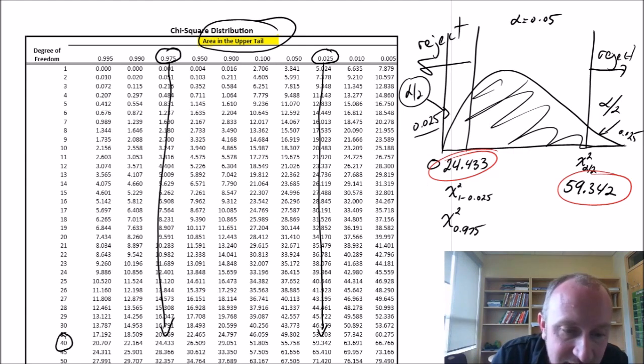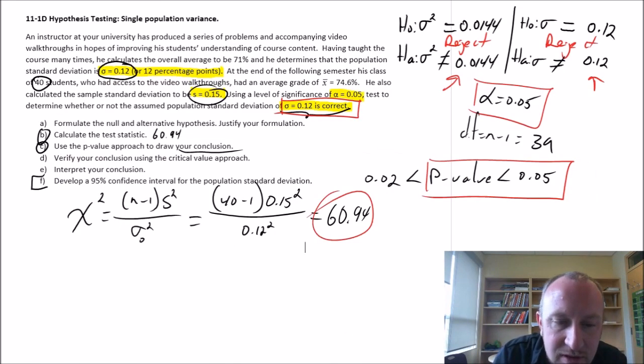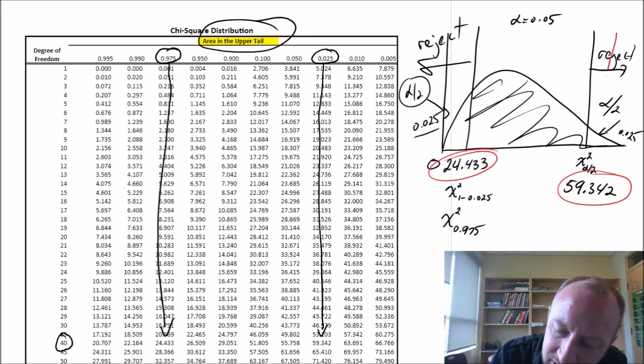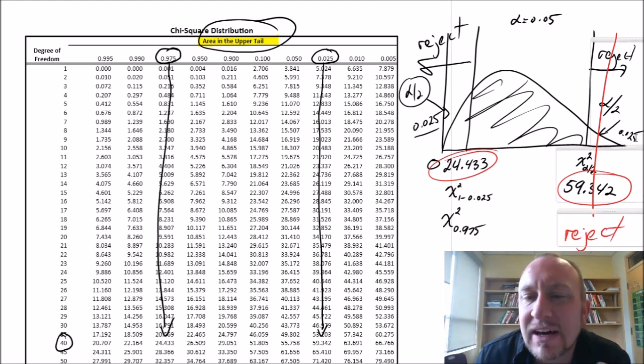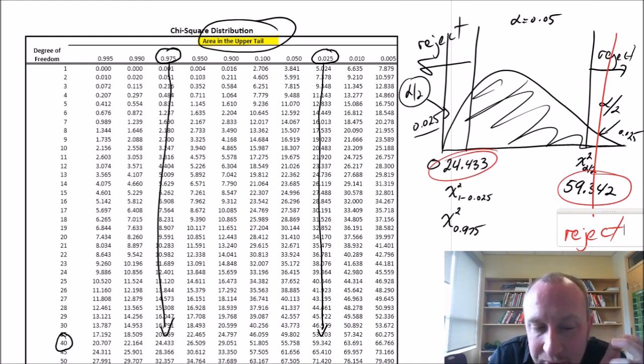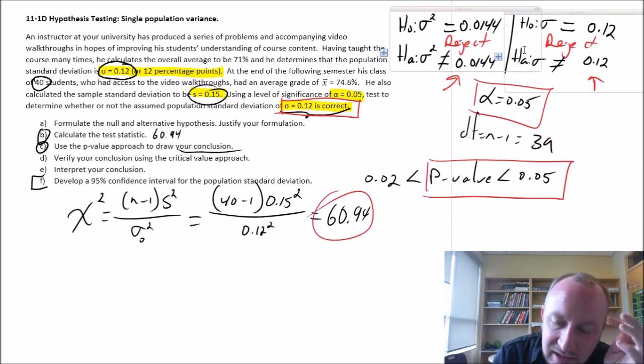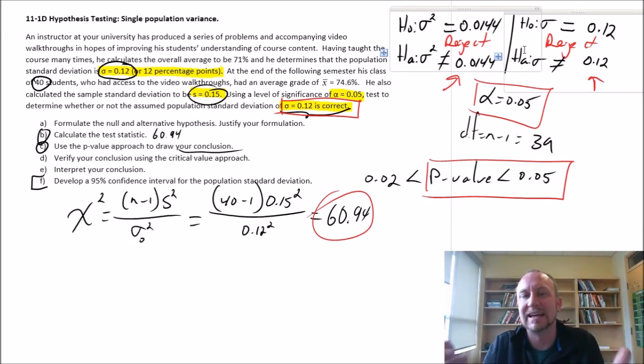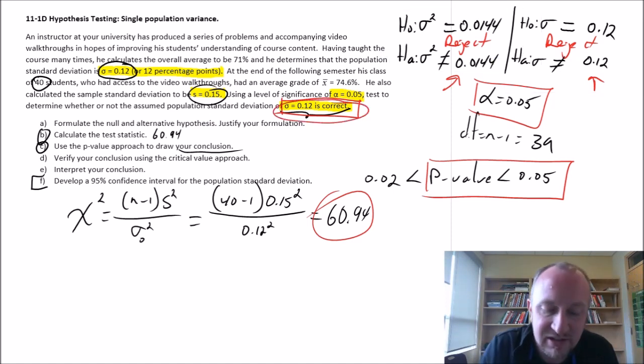So we'll reject if our test statistic is larger than 59.342, or smaller than 24.432. Now our test statistic was 60.94, and so we're larger than the upper tail critical value, so we can reject. So we already knew, our p-value approach already gave us that conclusion, but here now we've confirmed it using our critical value approach. We can reject that null hypothesis and say that our assumption on that standard deviation is in fact incorrect or is false.